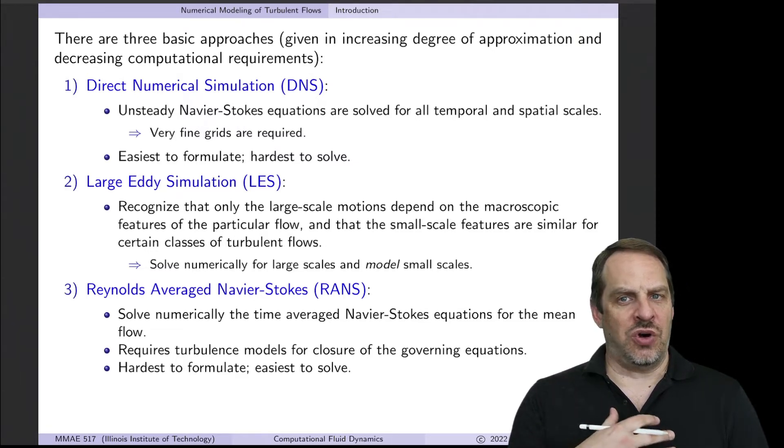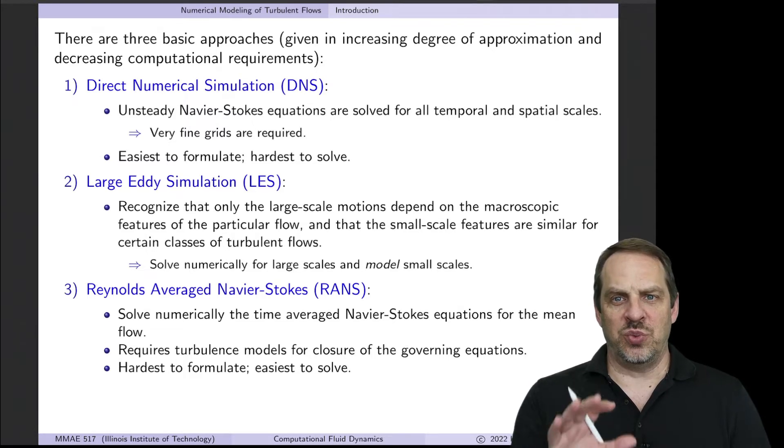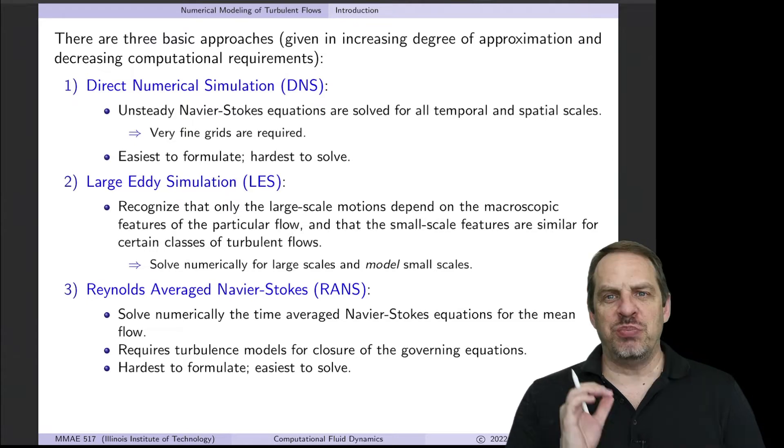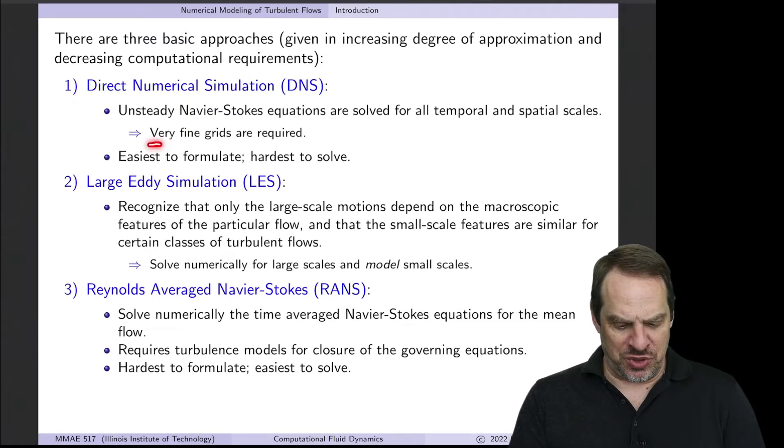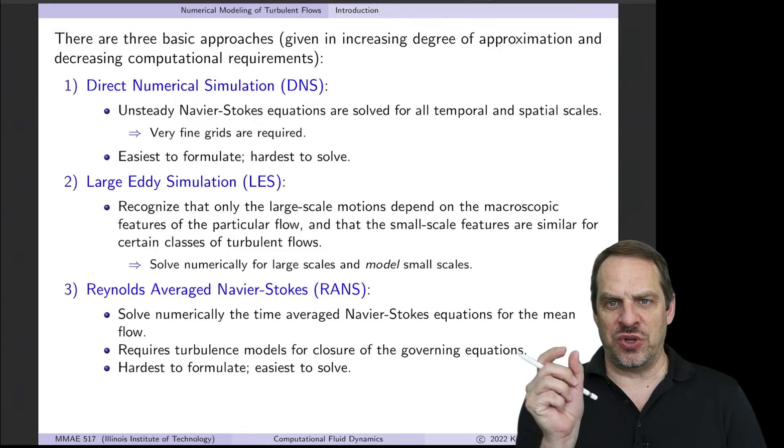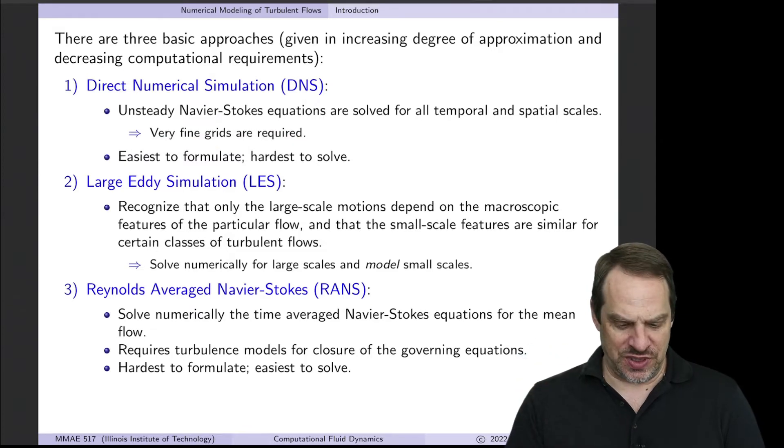So if we can resolve all of the scales, temporally and spatially, then we will capture turbulence when it does exist in the actual flow. But this will require very, very small time steps, as well as very fine grids, so small Δx's and Δy's and Δz's.